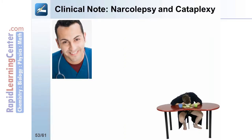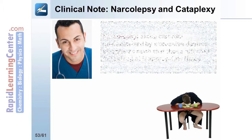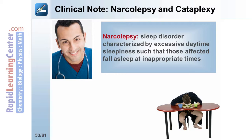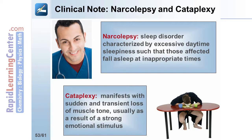Two sleep-related disorders to be aware of are narcolepsy and cataplexy. Narcolepsy is a sleep disorder due to irregularity of sleep-wake cycles that is characterized by excessive daytime sleepiness such that those affected fall asleep at inappropriate times, such as at work or at school. The patient's narcoleptic and night-sleep cycles start off with REM sleep, and hallucinations may occur just as they fall asleep or just as they awaken. Cataplexy is an associated disorder that manifests with sudden and transient loss of muscle tone, usually as a result of a strong emotional stimulus.